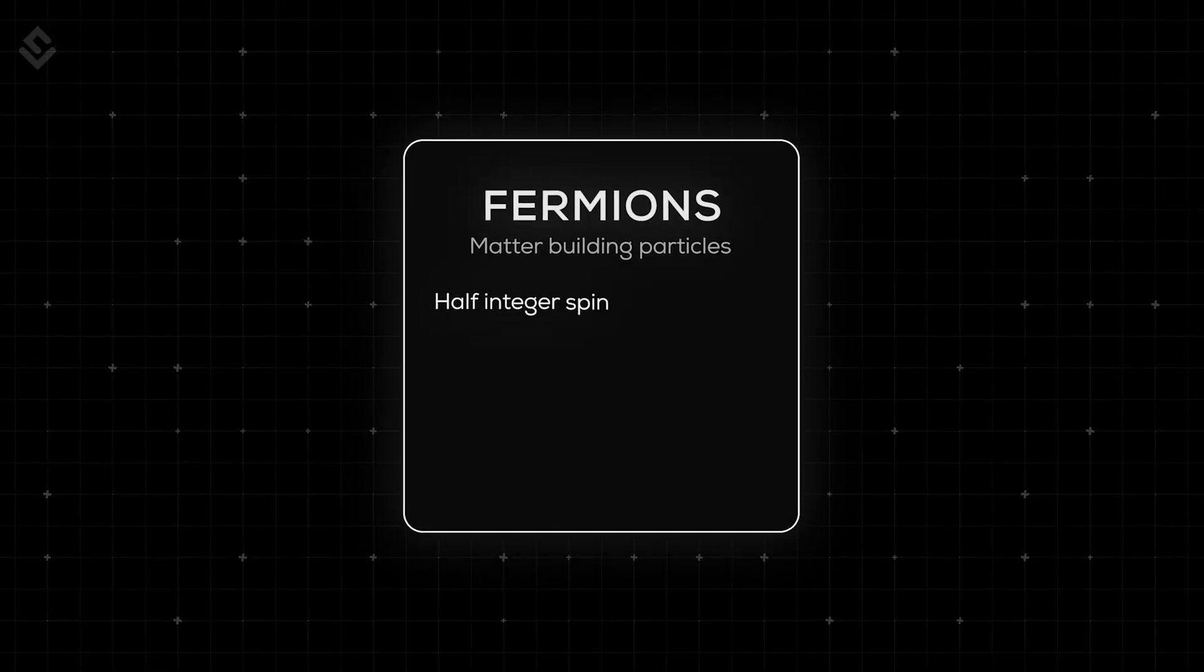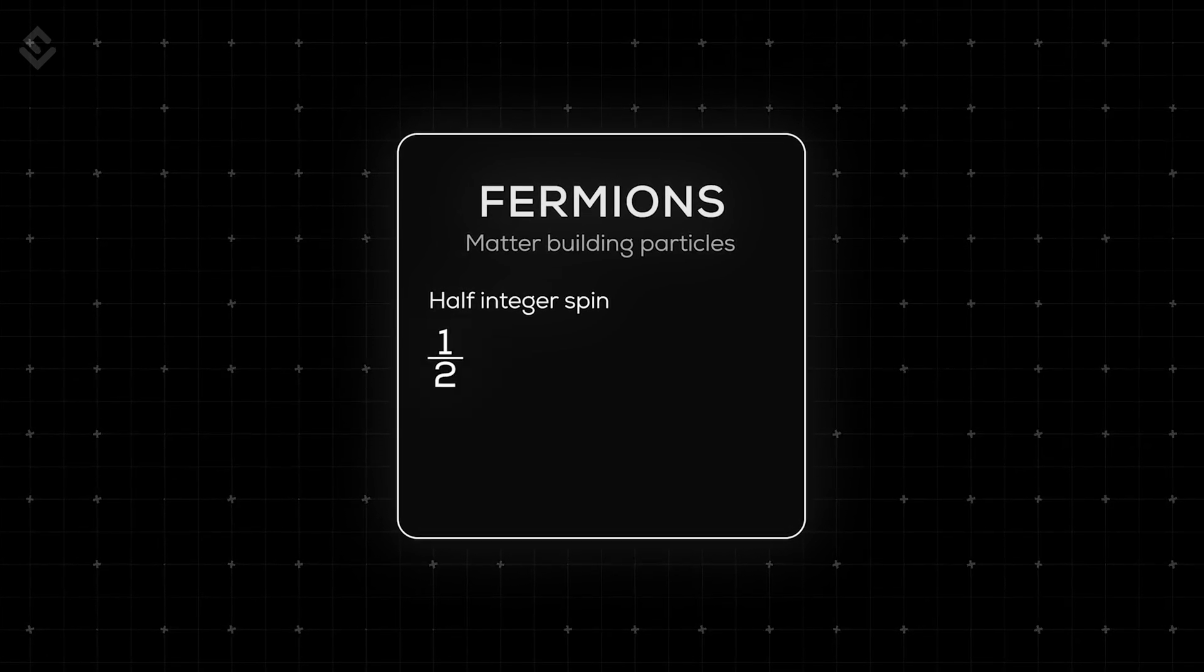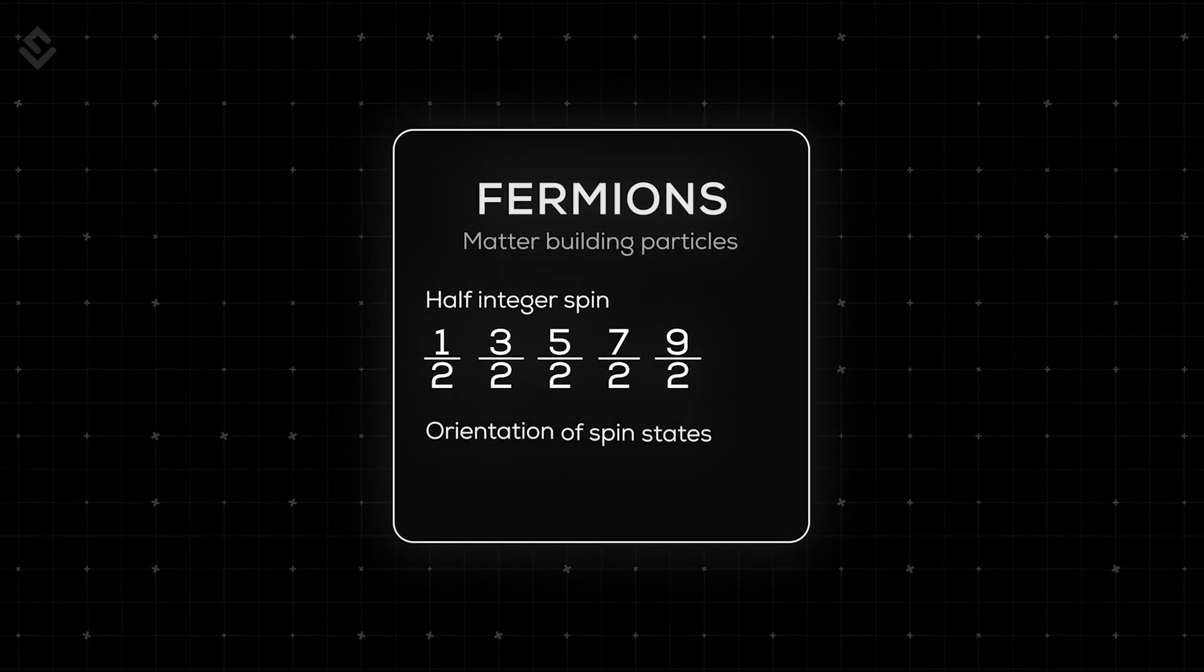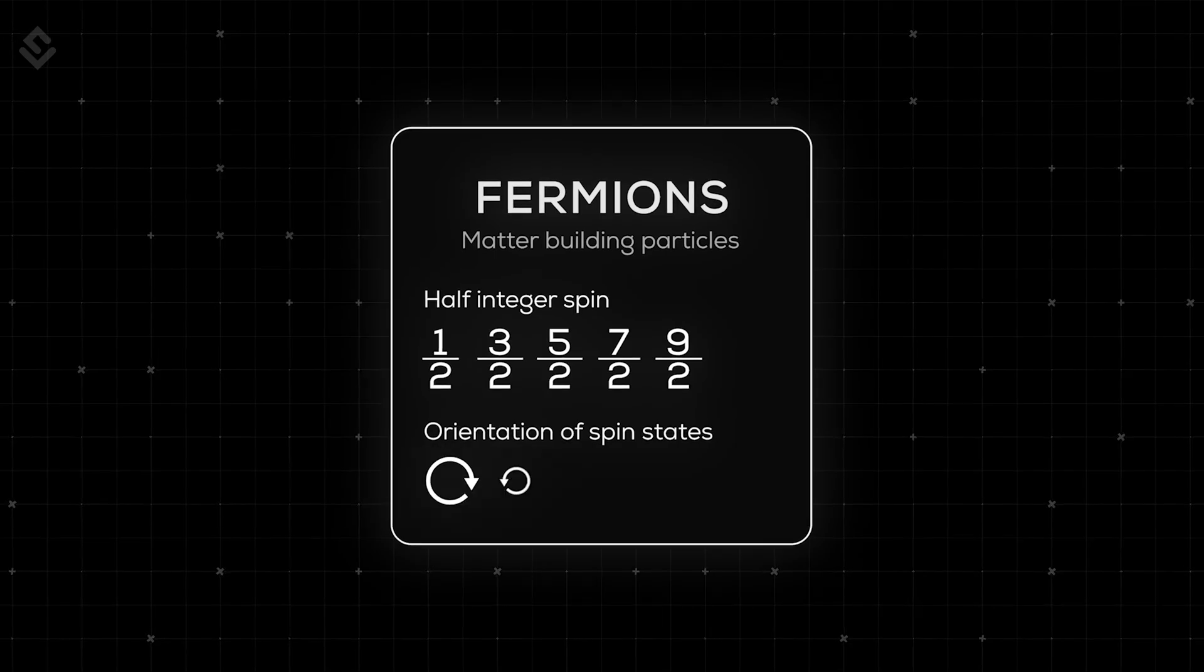The word spin, not to be confused with the actual spinning, is a quantum property that is related to the intrinsic angular momentum of the particle. So fermions are particles with half-integer spin and mathematically their spin states can be represented by 1/2, 3/2, etc. Also, the spin states have a particular orientation like upward and downward or clockwise and anticlockwise.